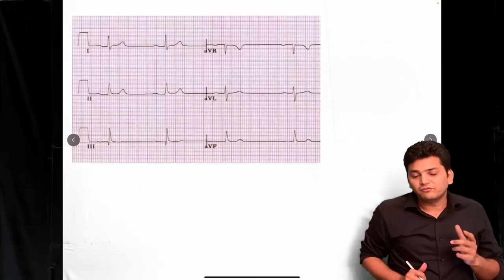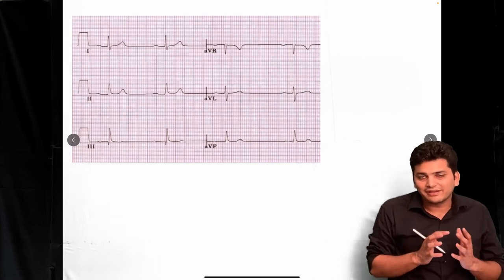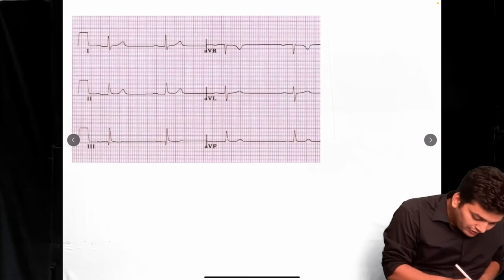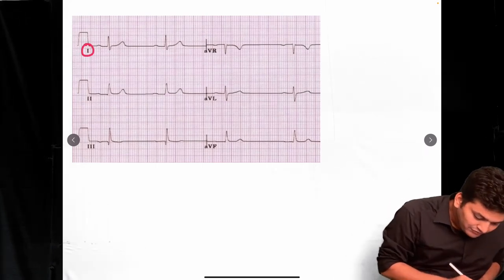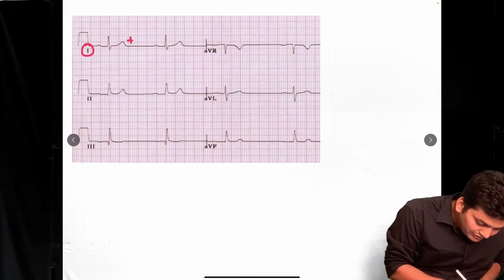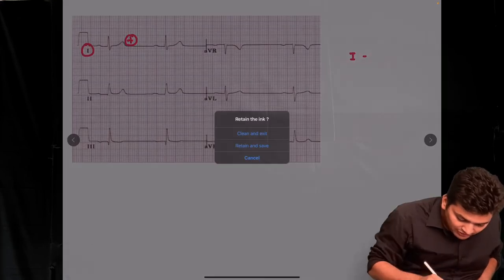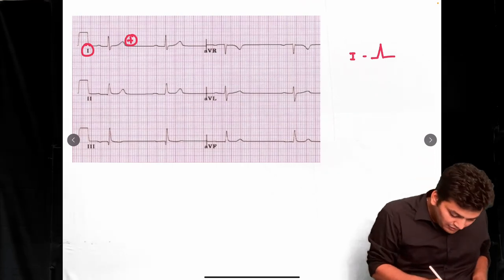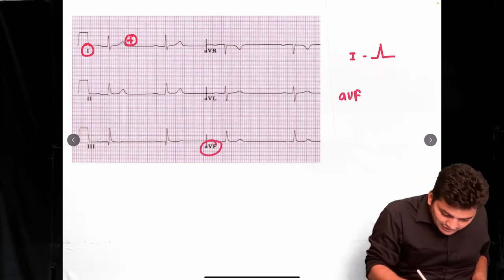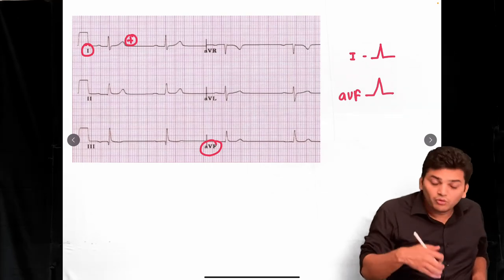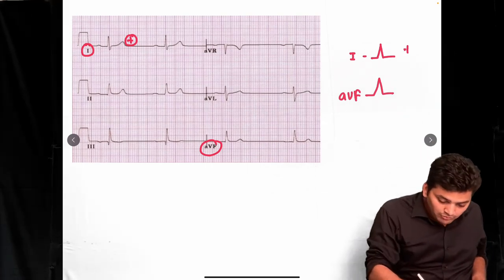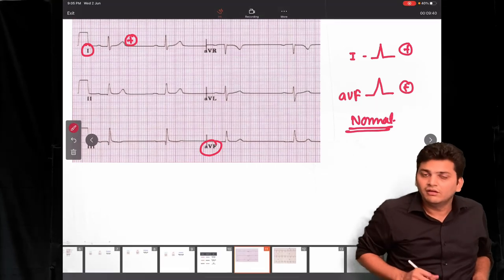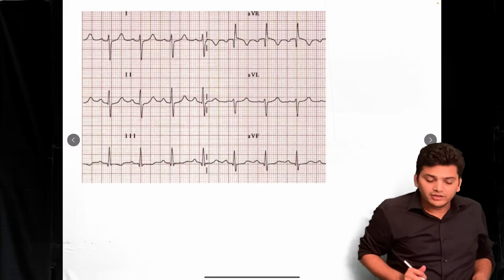Let's look at an ECG and find out whether it is right, left, or normal axis. You can pause the video and find out. In this first example, Lead I shows a positive deflection — the R wave is bigger. When it comes to AVF, the R wave is also bigger. Both are positive, so this is a normal axis.